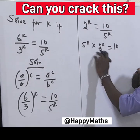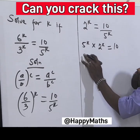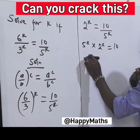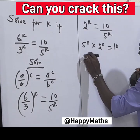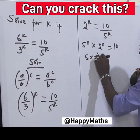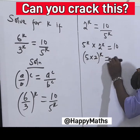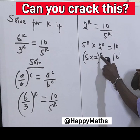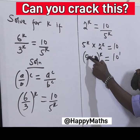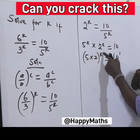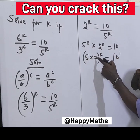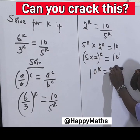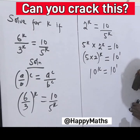Now don't forget — what we have here uses the rule of common bases. The left side becomes 5 times 2 raised to the power of k. We multiply the 5 and 2 together to get 10 raised by k, since 5 times 2 equals 10.